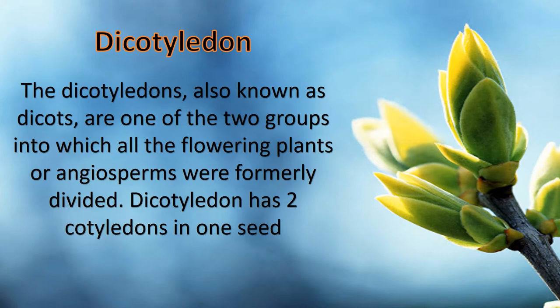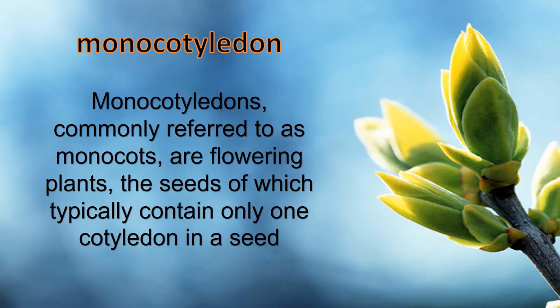The dicotyledon has two cotyledons in one seed. That's their main difference. Monocotyledons have one cotyledon in one seed.